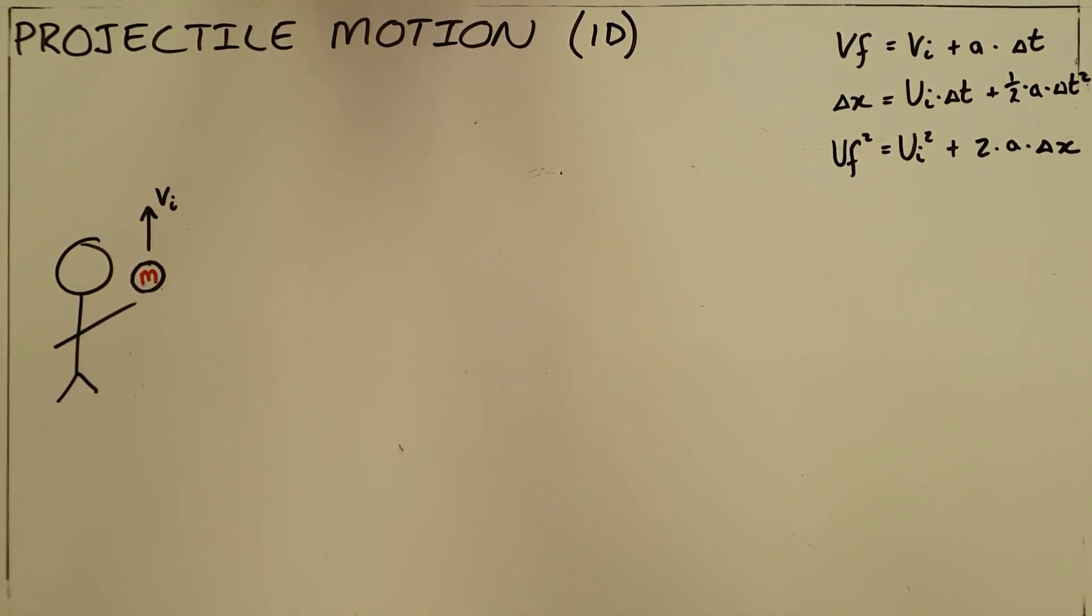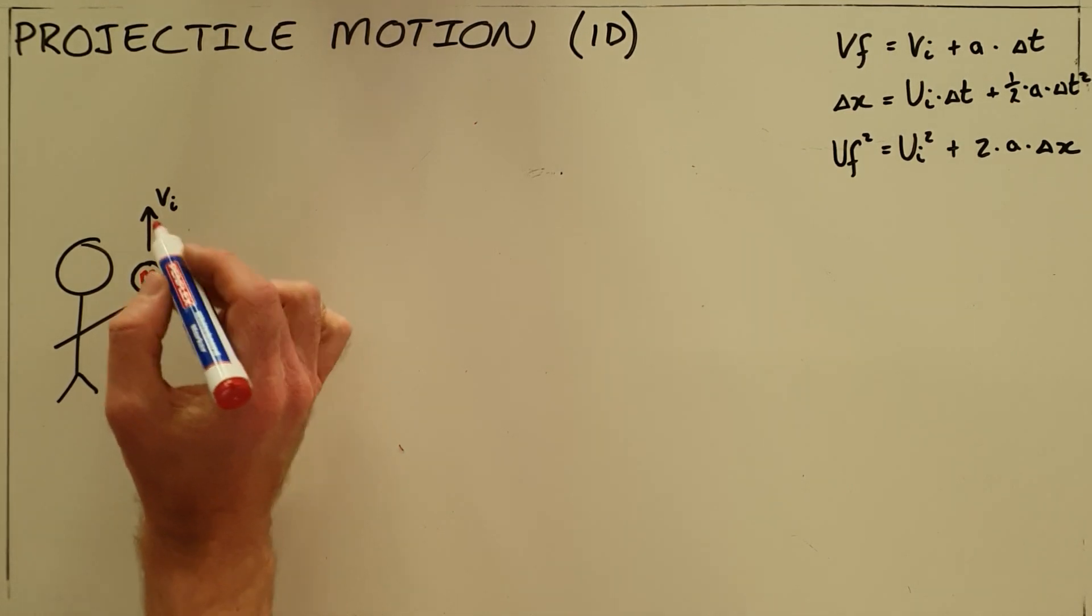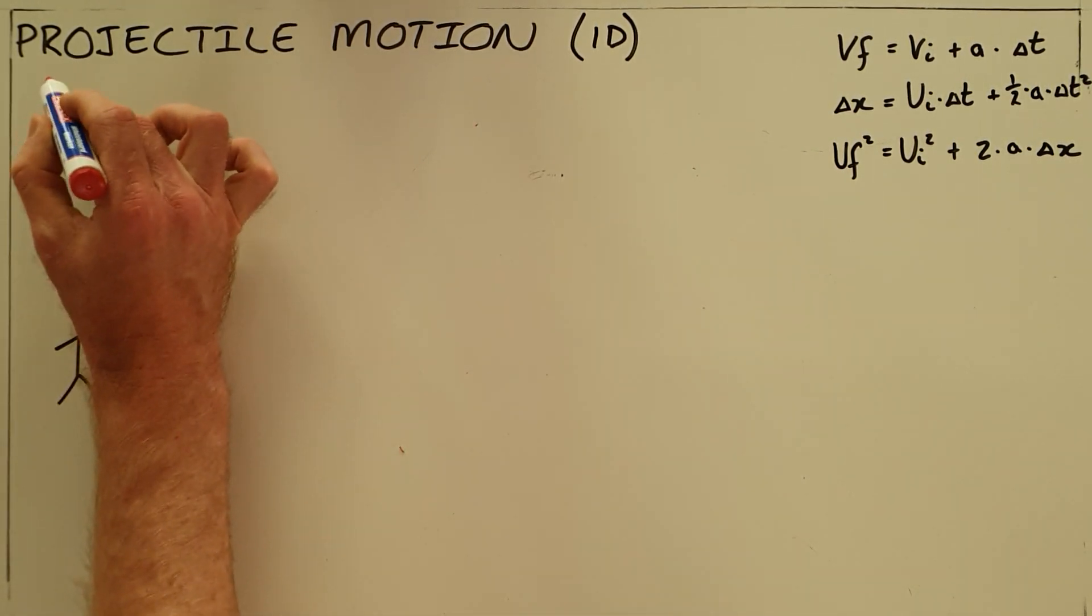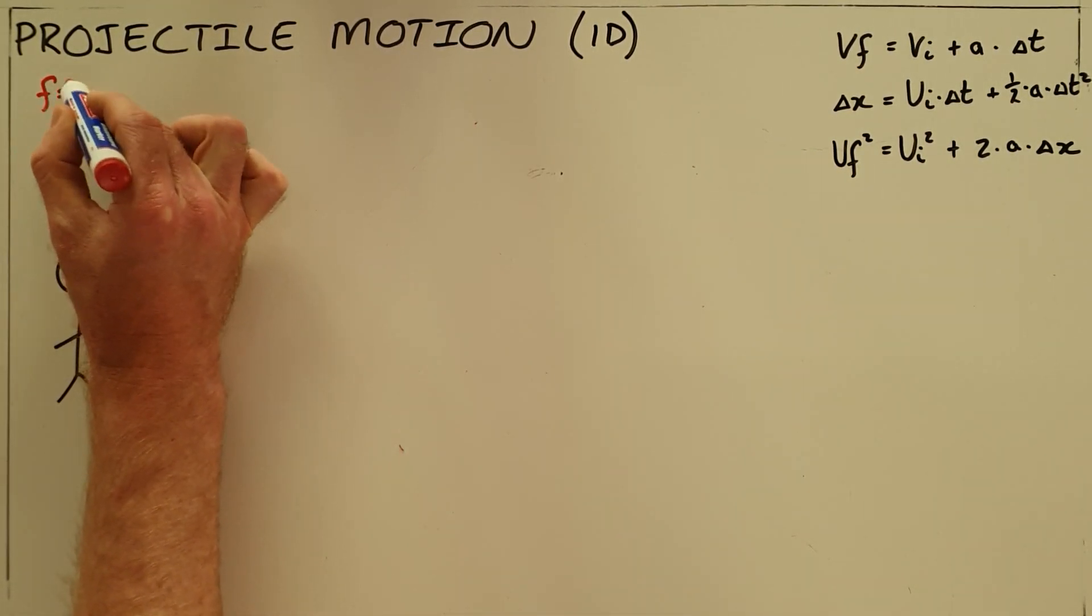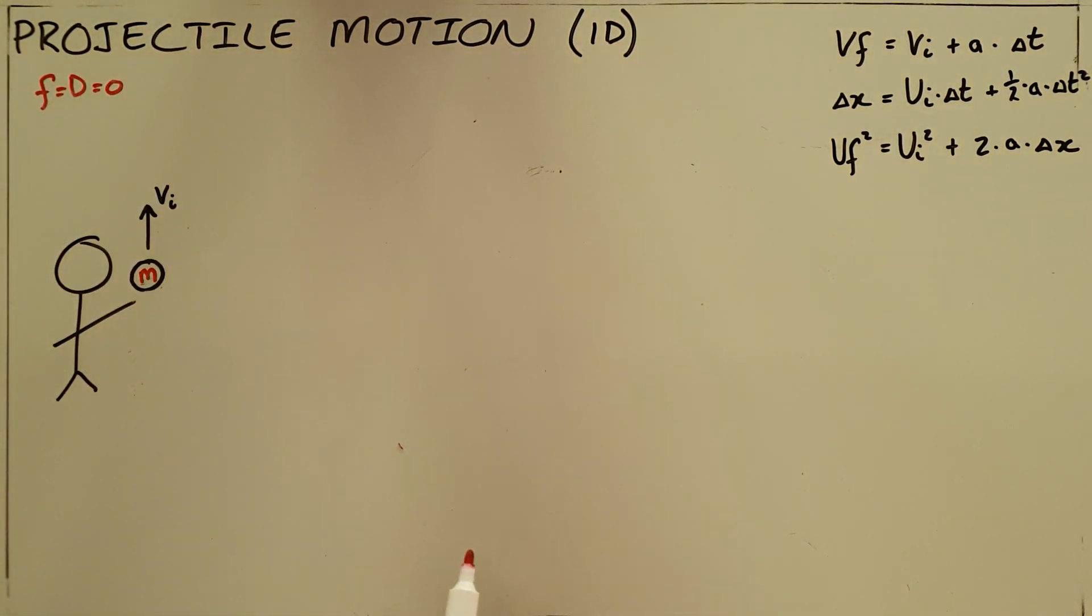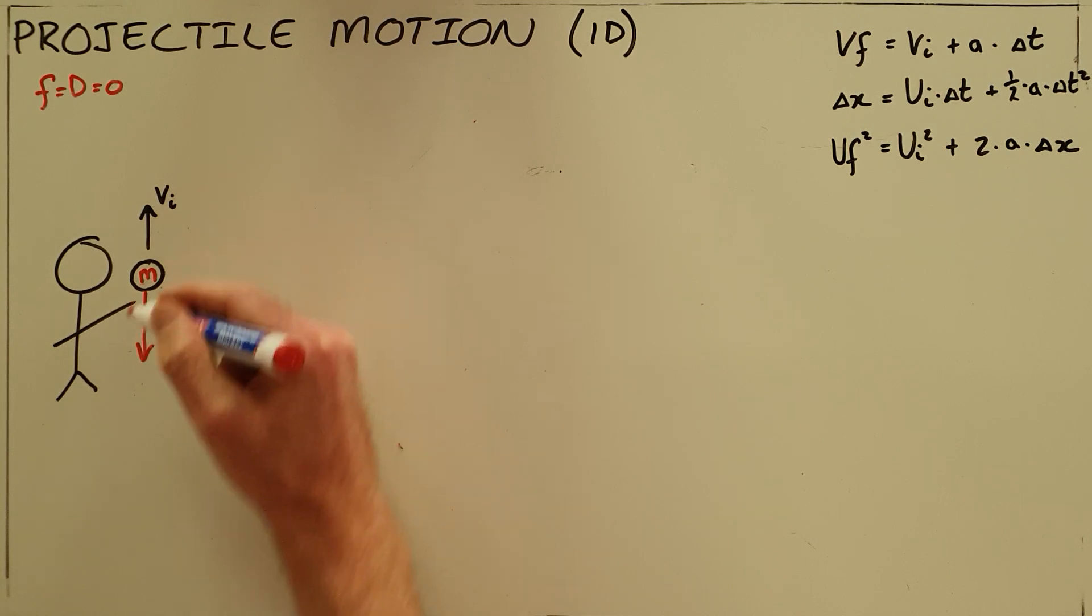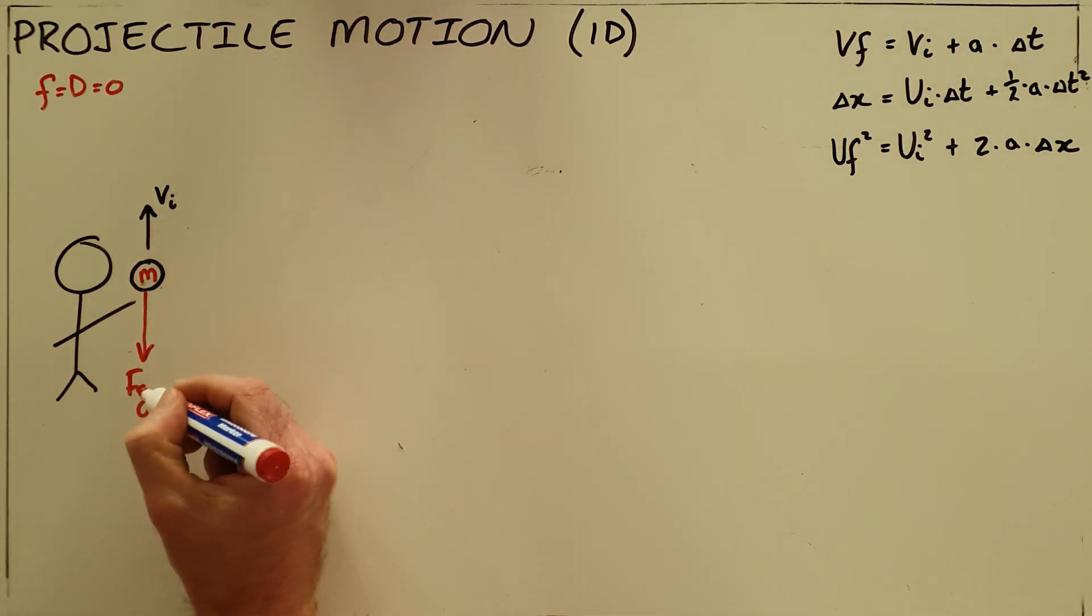If we consider an object with mass M that is either thrown or dropped in a vacuum, we know that the frictional force, drag force, or wind resistance on that object is zero or negligible. This means there is only one force acting on that object, that being the force of gravity.